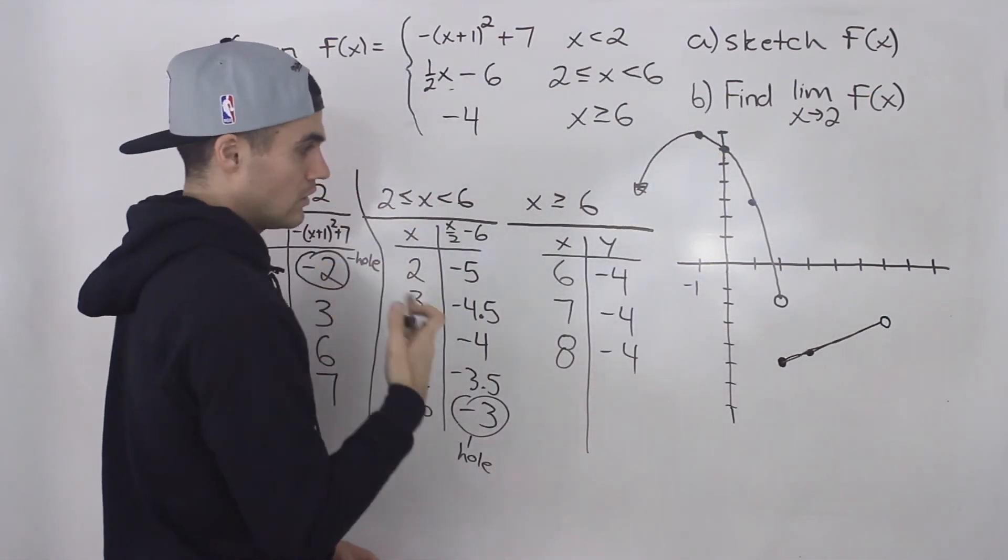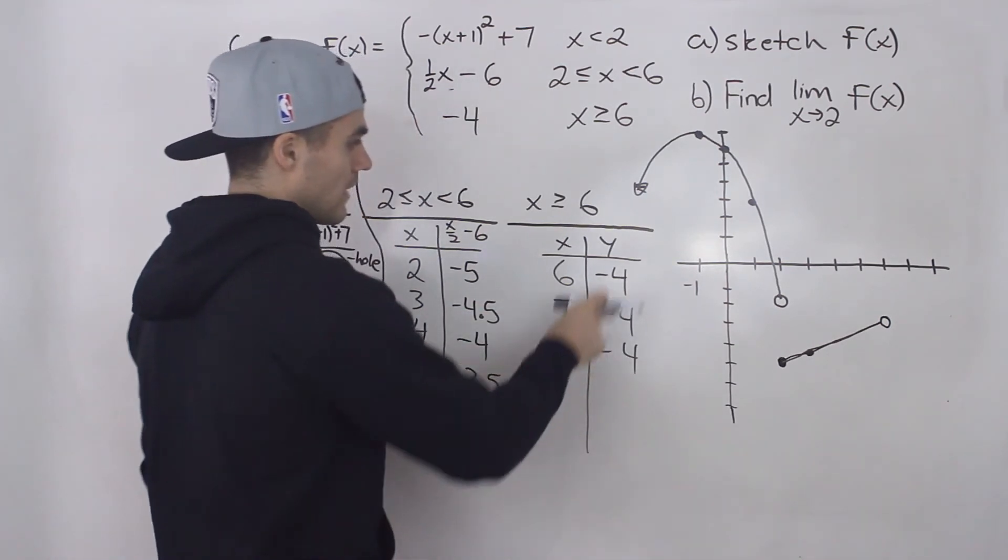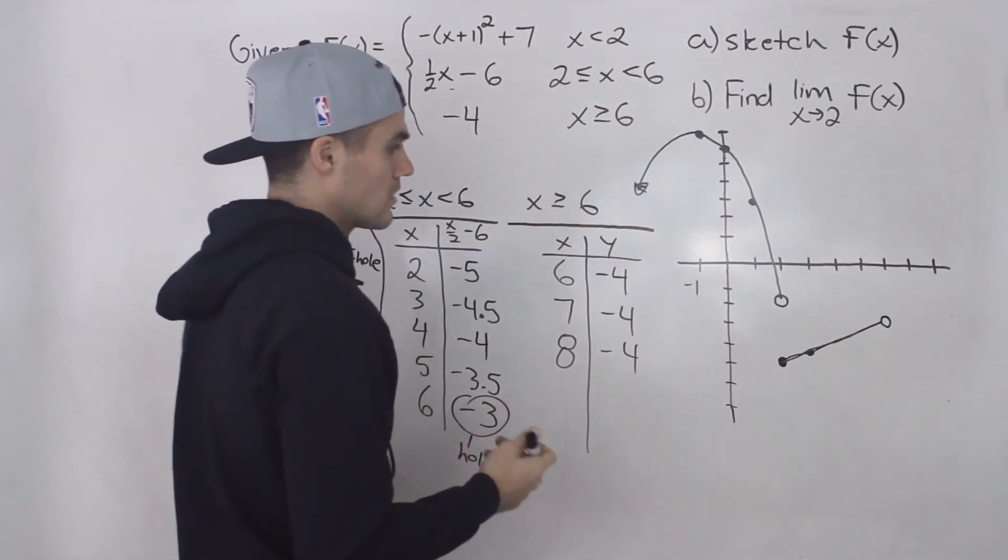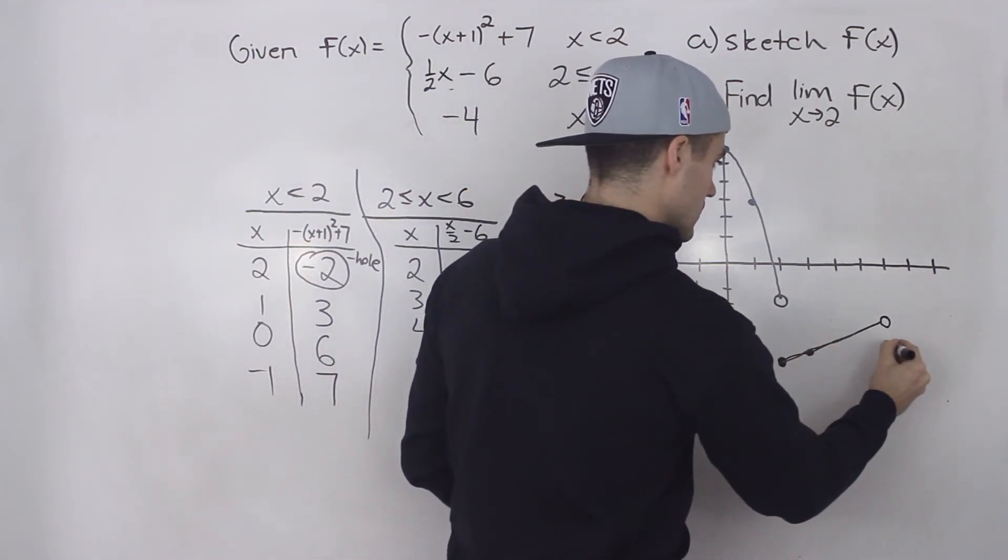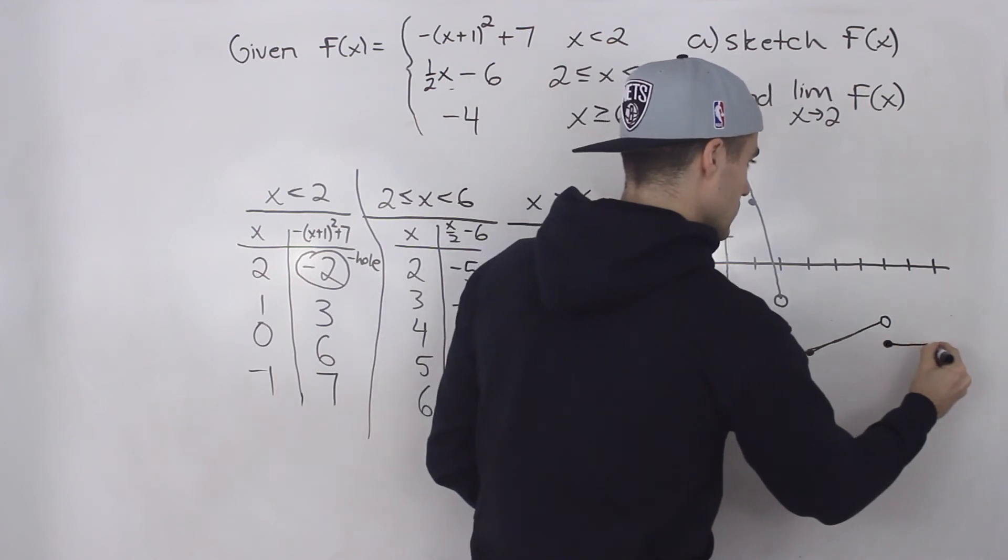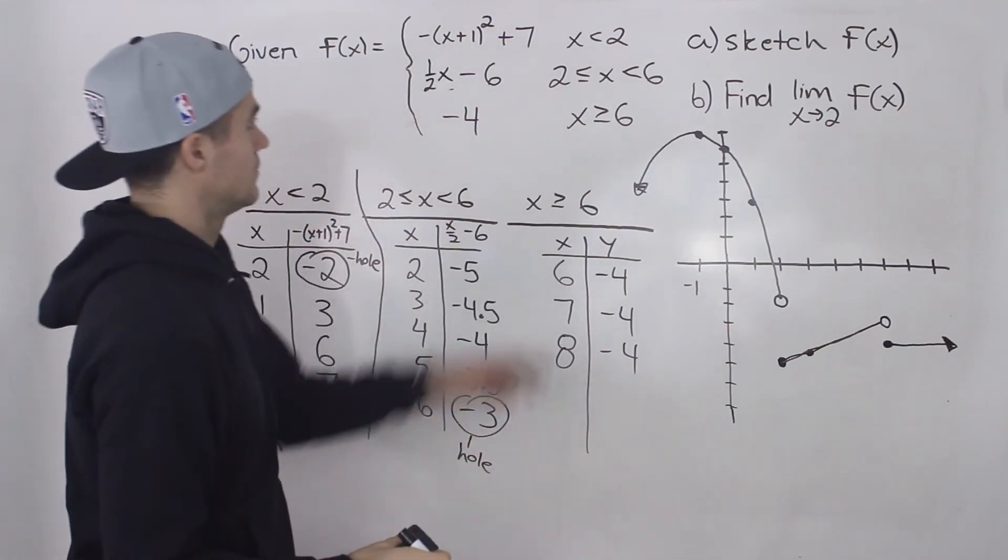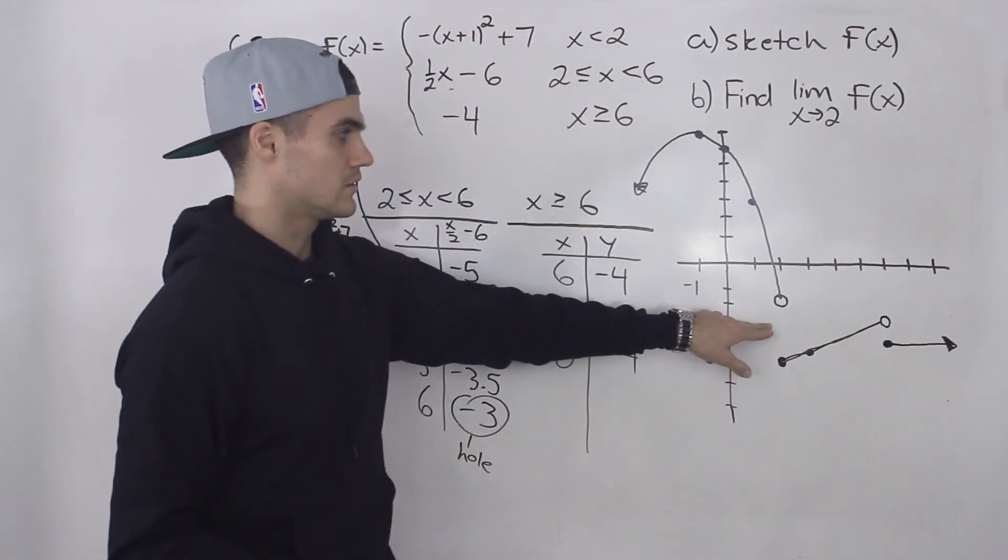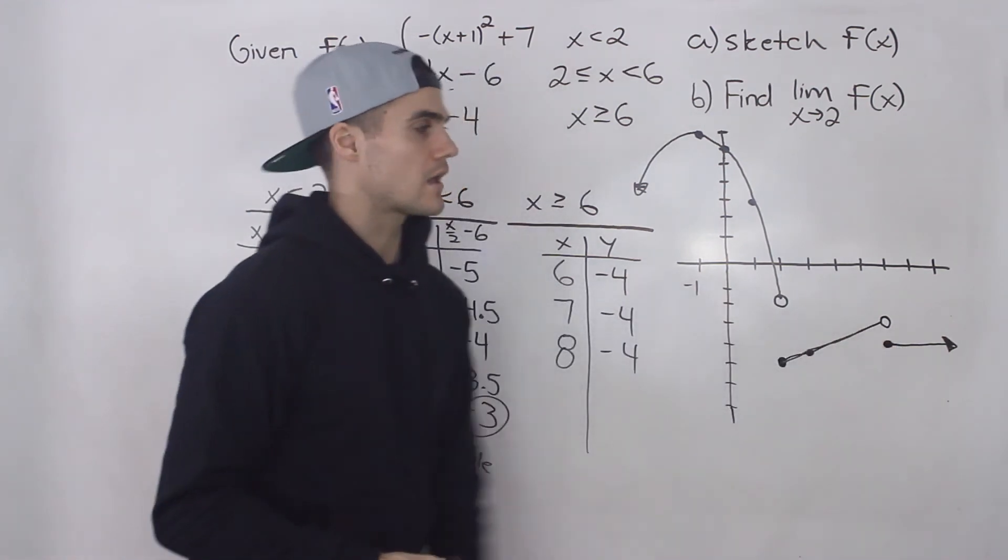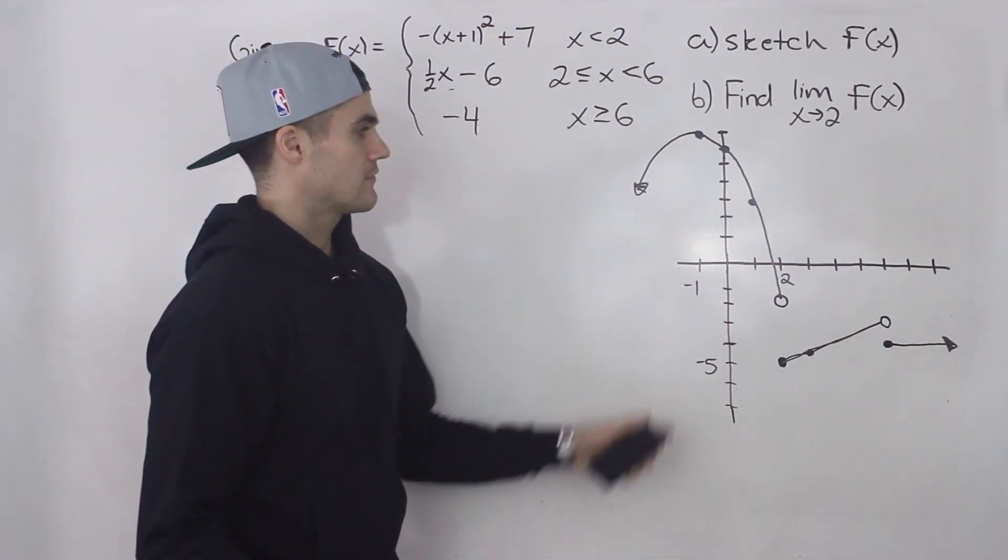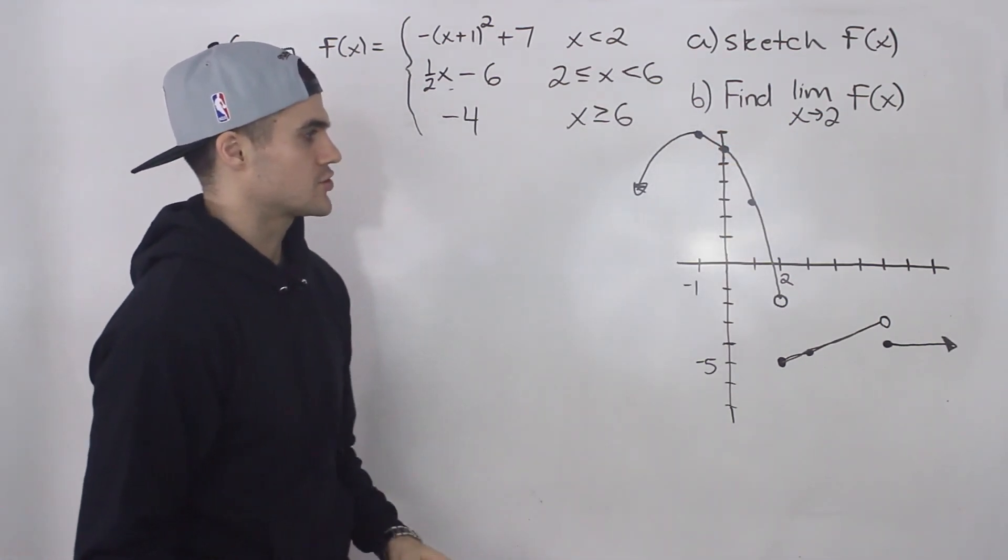And then for all of the x values, six to positive infinity, we know that the y values are just going to be negative four. So negative four is down here. And that's just going to be a horizontal line. So this piecewise function looks something like this. We have a parabola, then we have a line, then we have a horizontal line. And now that we have the sketch of the function, we can solve what the limit as x approaches two for this function is.